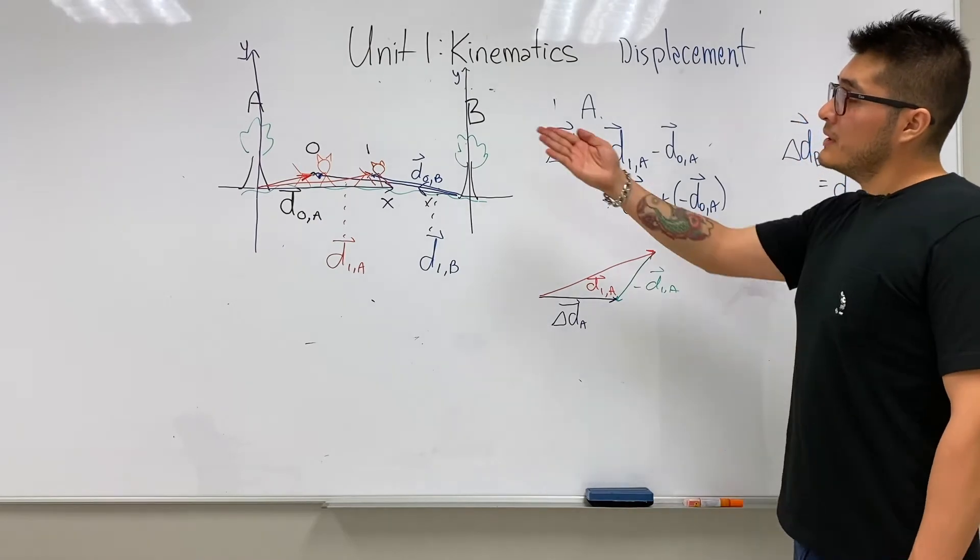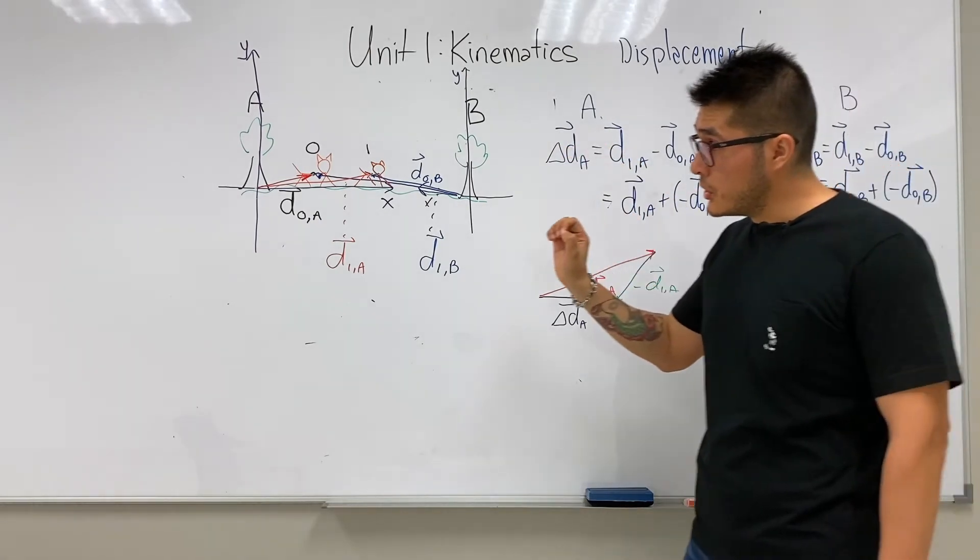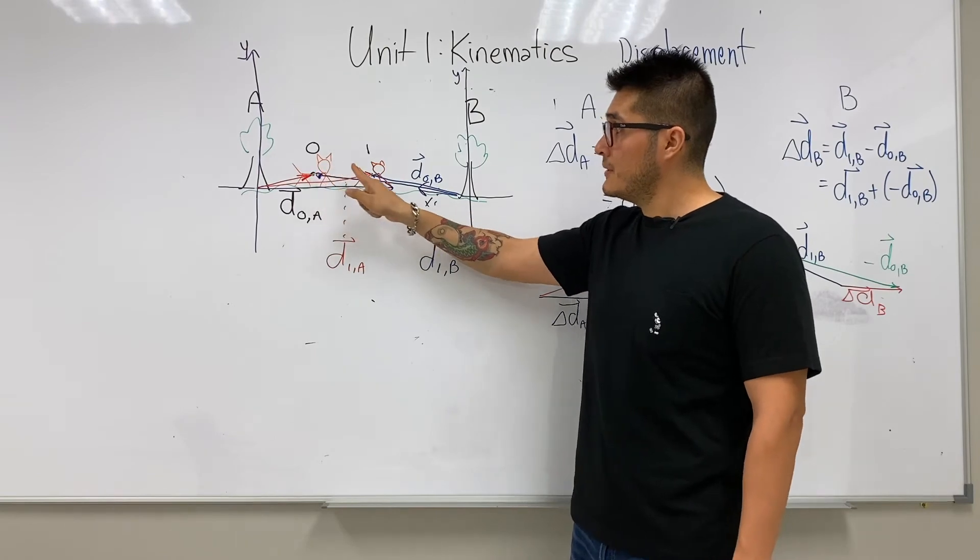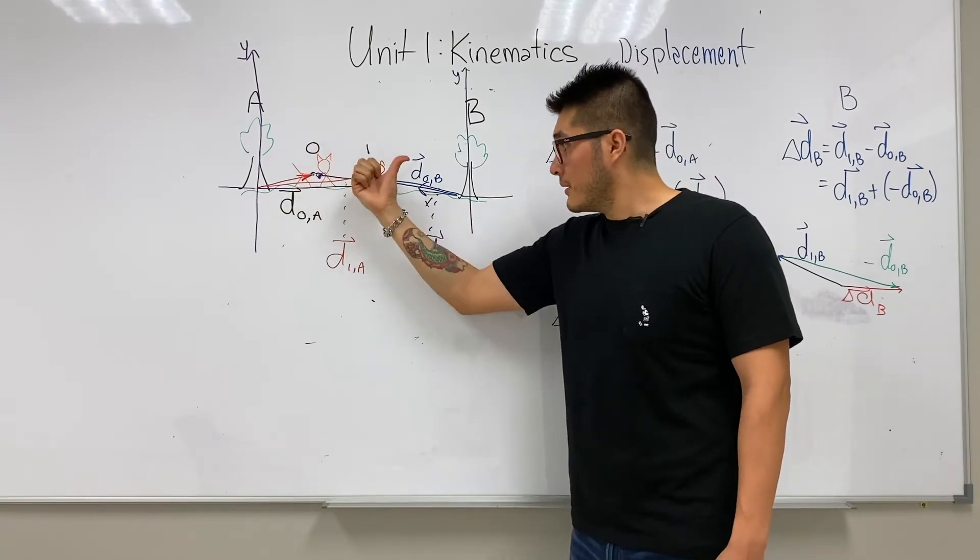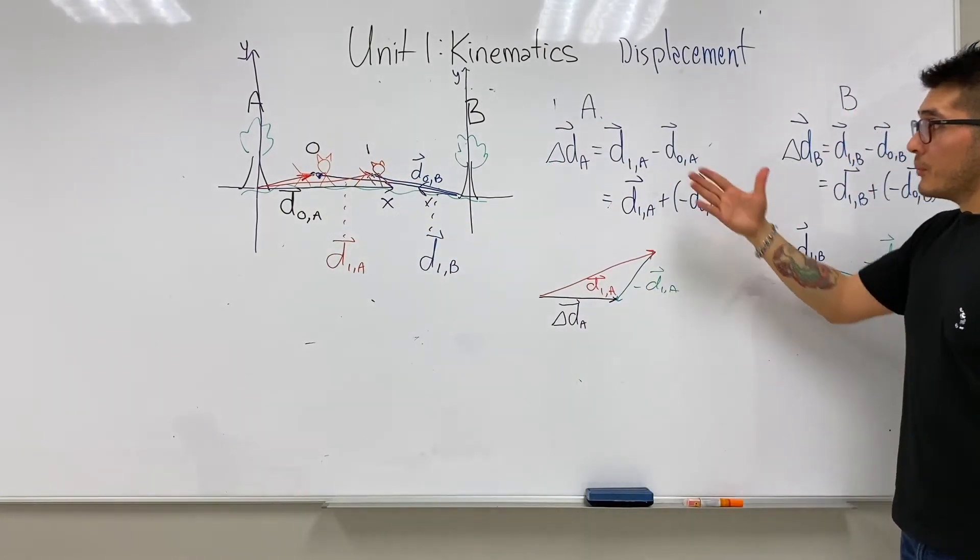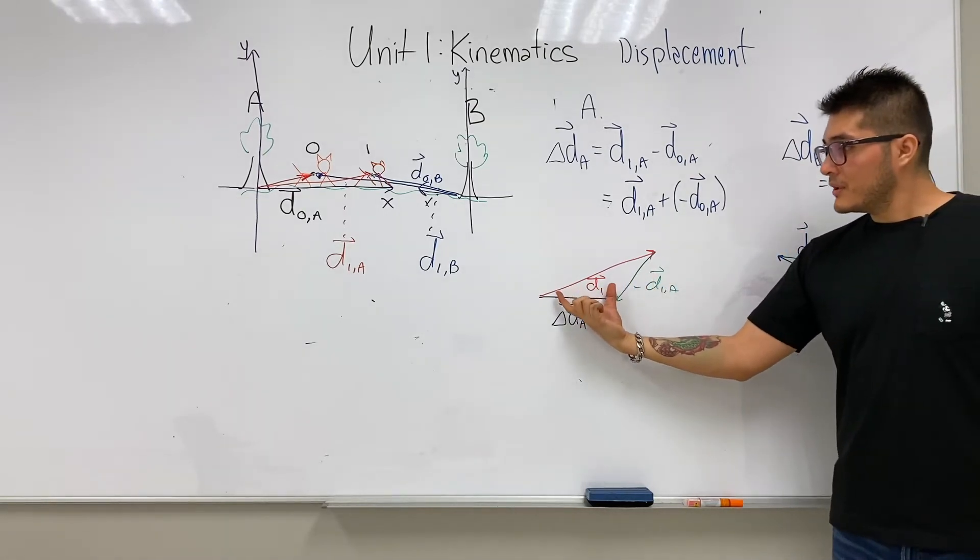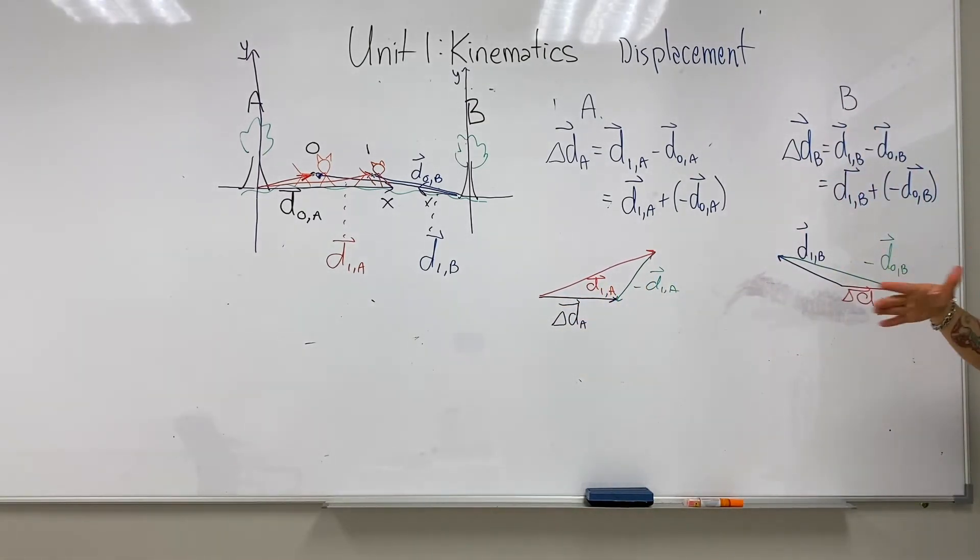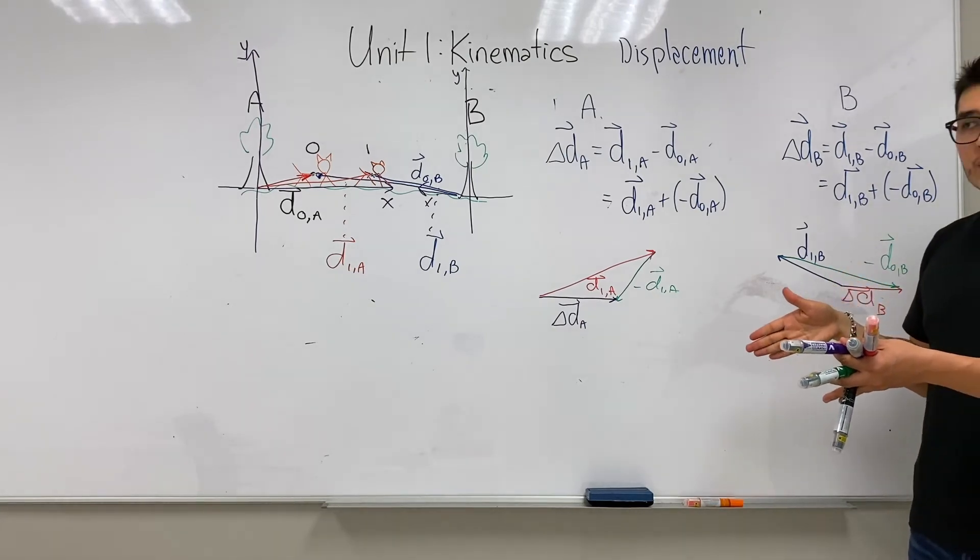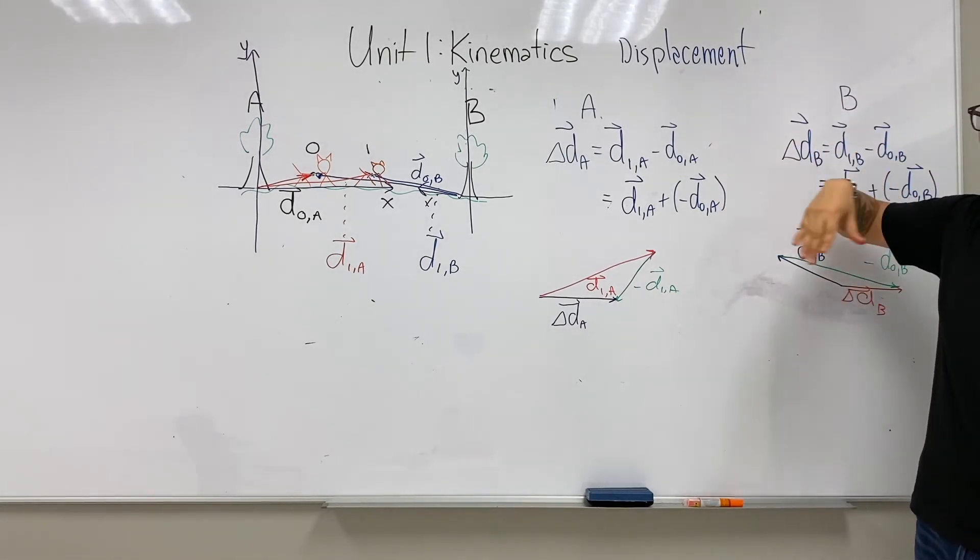But what these two friends can now agree on is, for sure, the cheetah has moved some distance to the right. So from both points of view, we were able to measure the displacement, which was to the right with that amount of distance. So that is our solution to the problem we had before.